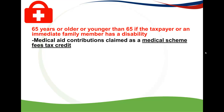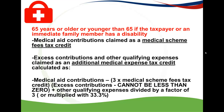There are still two types of tax credits: the medical schemes fees tax credit, and then the additional medical expense tax credit. The medical schemes fees tax credit is calculated exactly the same in Part 2 as it was in Part 1, so we will look at that again just to recap. The additional medical expense tax credit, however, is calculated a little bit differently.